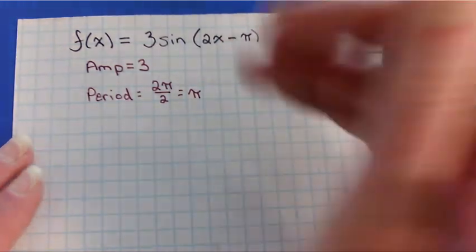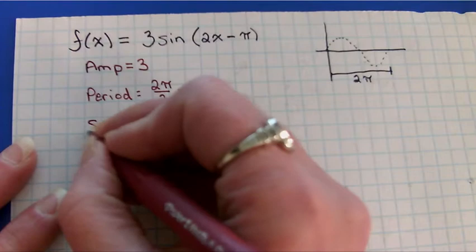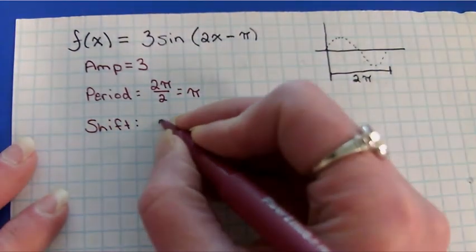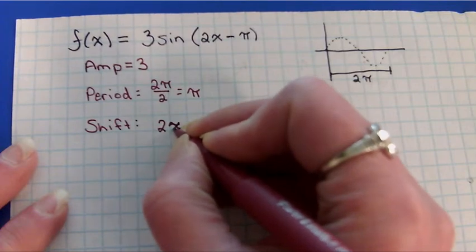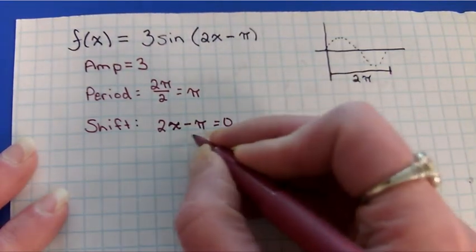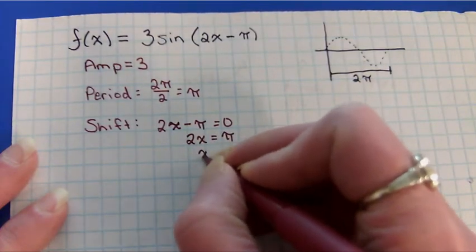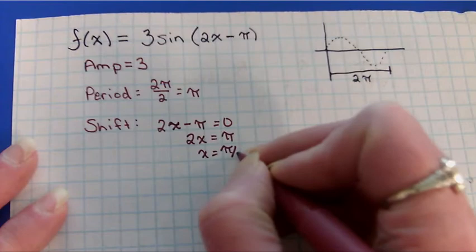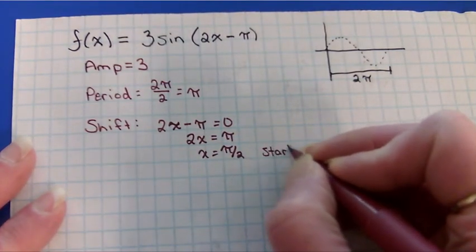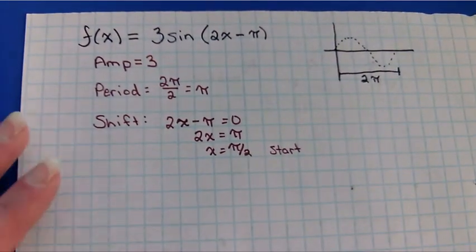Now because there's something subtracted or added within there, that actually gives me a shift. So the way to find the shift is to take that, what's 2x minus π, I set it equal to zero. So this is going to be, since that's a positive shift, that means I'm going to start at π/2 instead of starting at 0, 0.